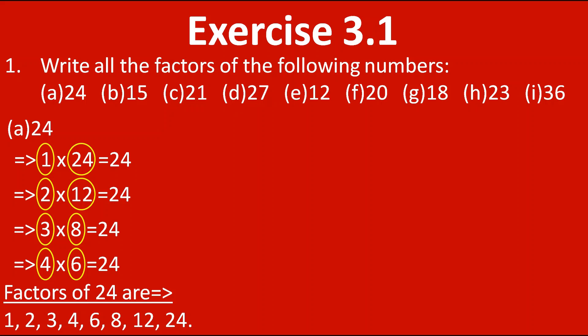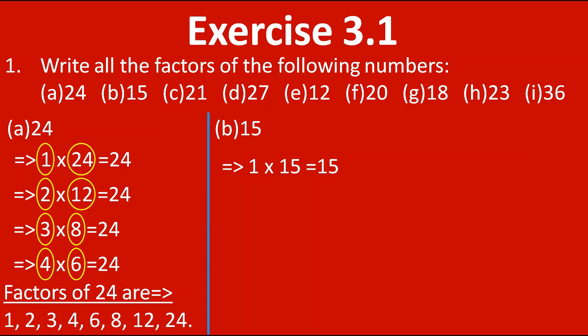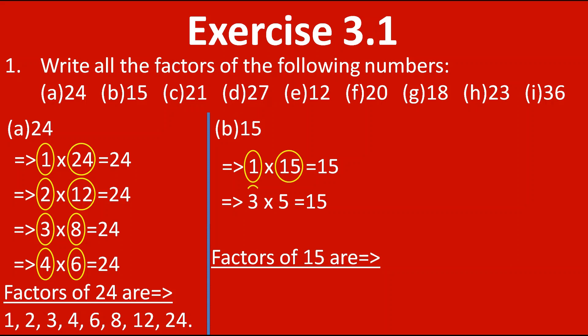Now let's move towards the next number, 15. Starting from 1: 1 into 15 gives us 15. Next we check in the table of 2, but there is no 15 — we have 14 and 16. Next table is 3: 3 fives are 15. Next is 4, but in the 4th table we have 16, so it won't come. Now the 5th table is reversing — we have already written 5 here, so we stop. The factors of 15 are 1, 3, 5 and 15.